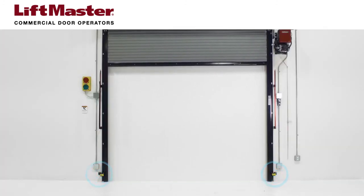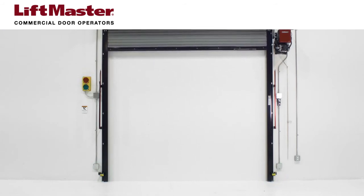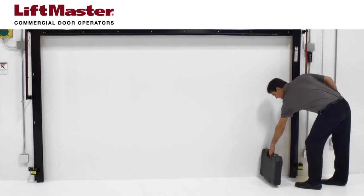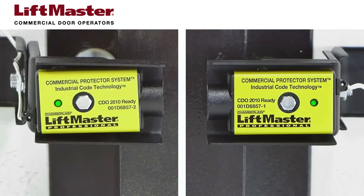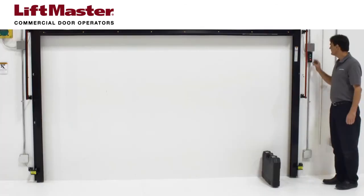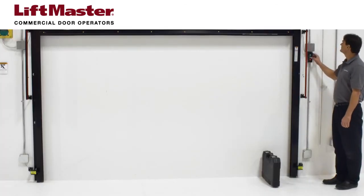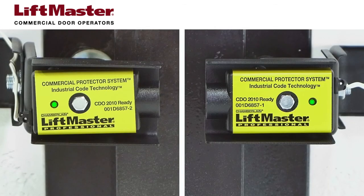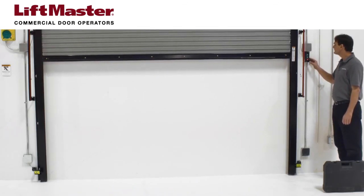Test the protector system to ensure the photoelectric sensors are working properly. Open the door fully and place an obstruction between the photoelectric sensors. The LEDs on both sensors should begin blinking. Stand clear of the door and give a close command. The door should not move. Remove the obstruction. The sensor LEDs should revert to solid green. Give another close command. The door should now close.